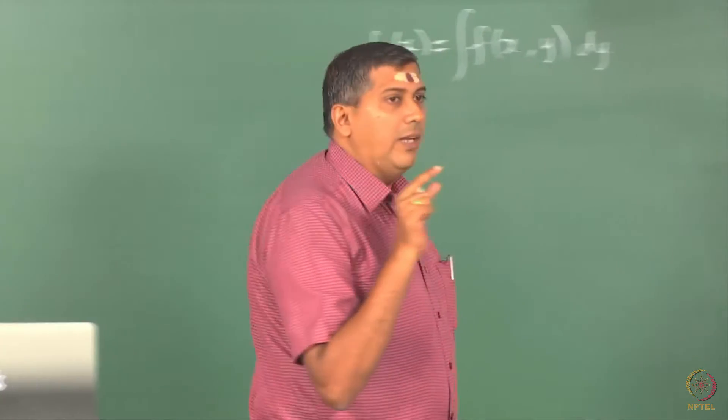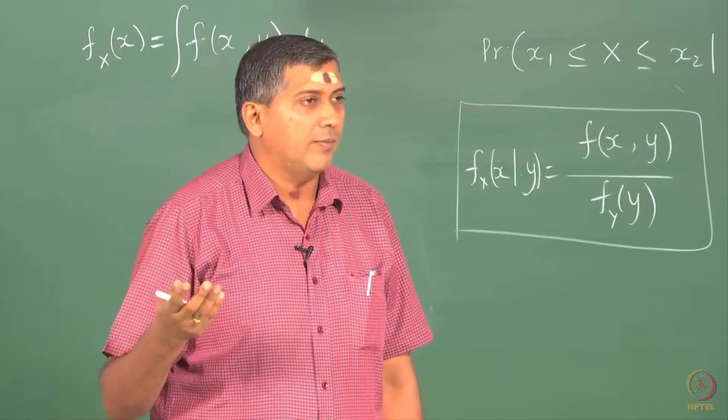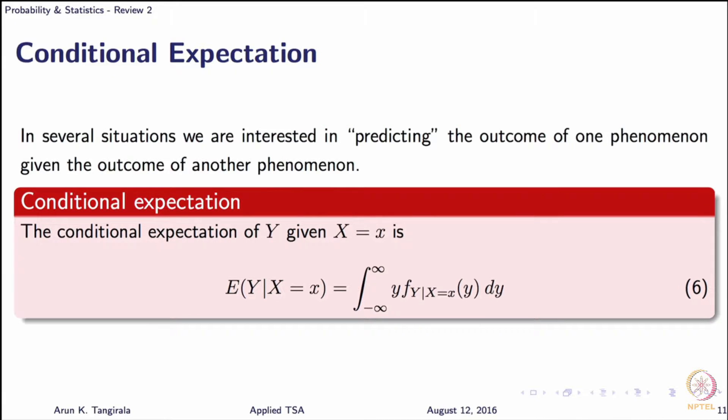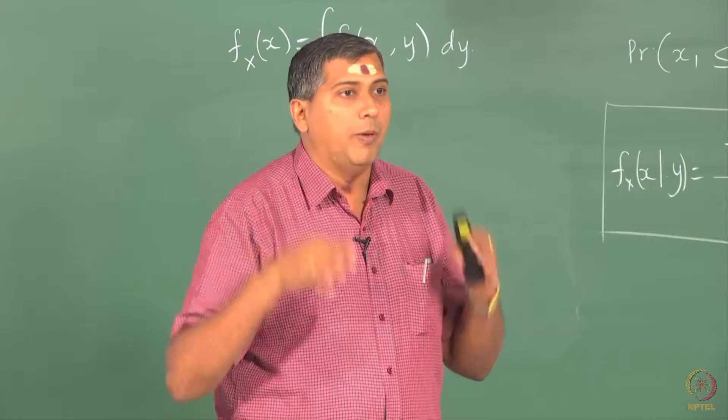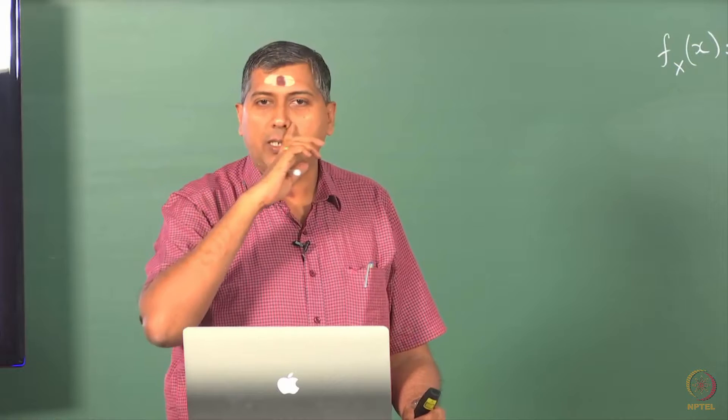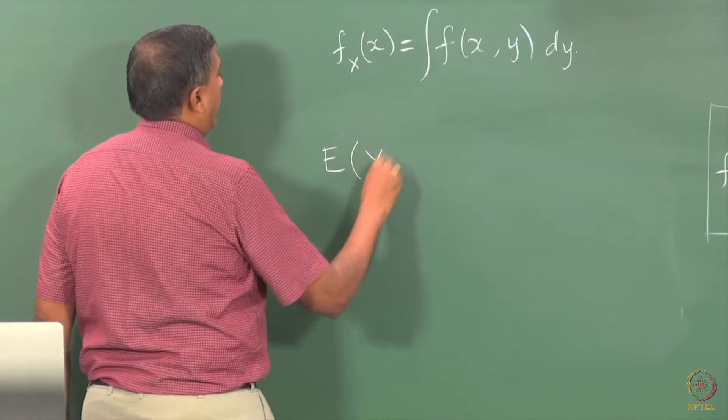Before the match begins, I do not have any information about it. I have an unconditional kind of expectation based on whatever history that I have. Now, the score starts to pour in and I start making conditional expectations. The conditional expectation in general need not be the same as unconditional expectation. But yesterday we argued intuitively that expectation is the best prediction in the absence of any other information, best in the sense of minimum mean square error. It turns out that this conditional expectation is also the best prediction of y.